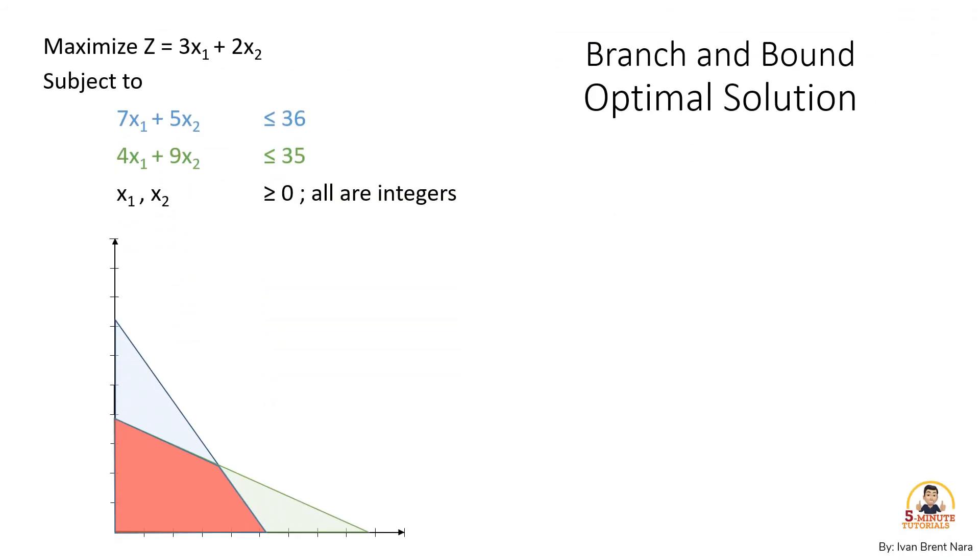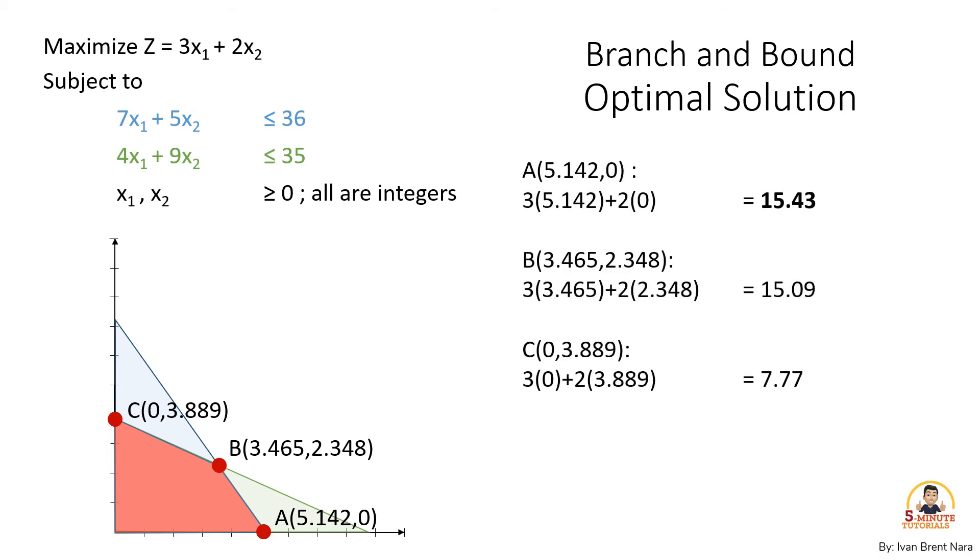we need to choose from the three points A, B, and C that satisfy the constraints and which point generates maximum value after plugging our decision variables into the objective function.